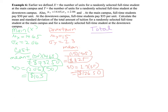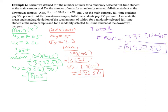To find the total mean, we add the downtown mean ($825) and the main campus mean ($732.50), giving an overall mean cost of $1,557.50 for choosing one random student from each campus. For the standard deviation, we add the variances and take the square root: 103 squared plus 126.5 squared, then take the square root. This gives a standard deviation of $163.13.